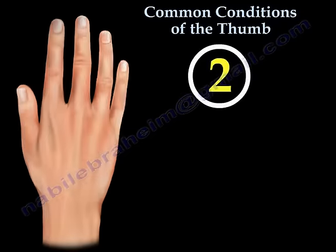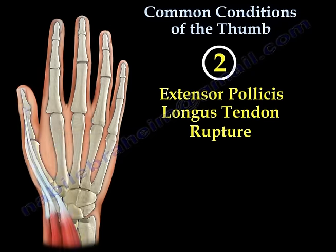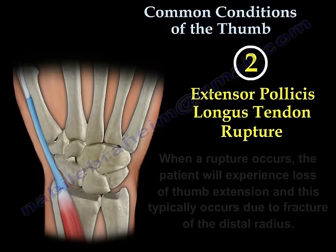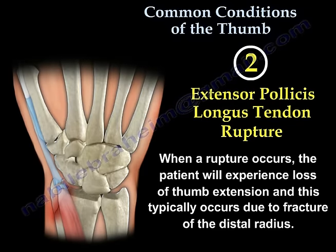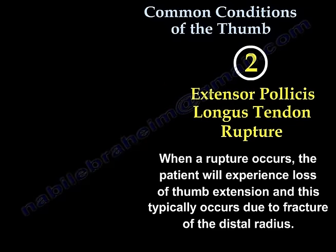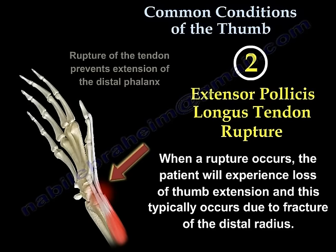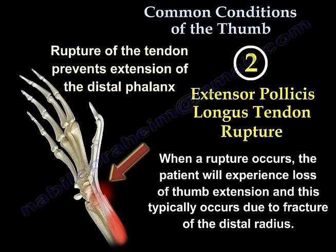Another condition is extensor pollicis longus tendon rupture. This tendon is responsible for extension of the thumb, especially at the distal interphalangeal joint. It occurs usually with fractures of the distal radius that are not displaced. When it happens, the patient will not be able to extend the thumb.